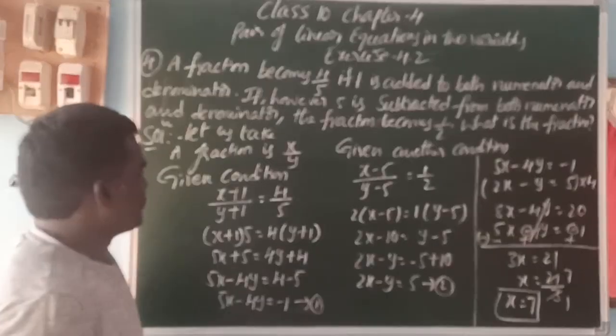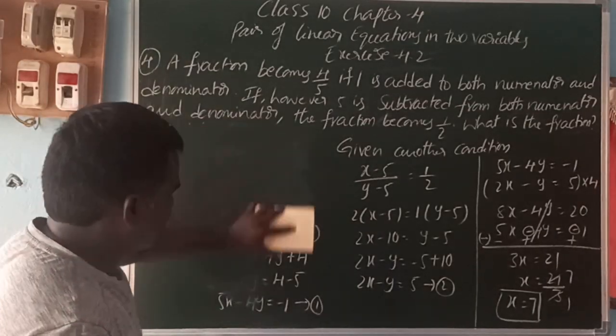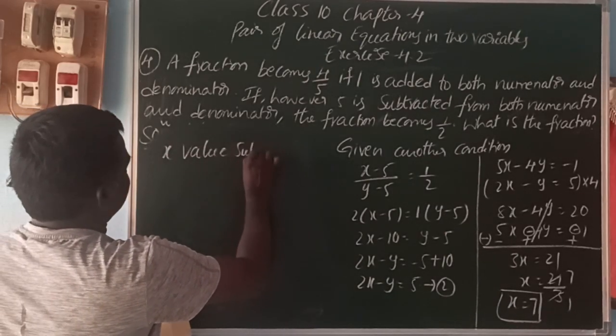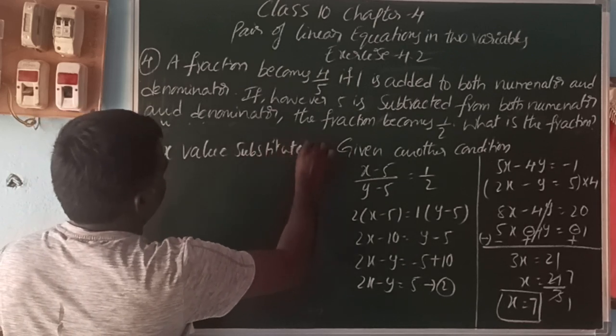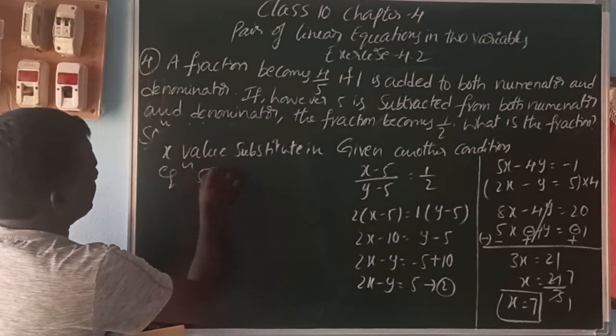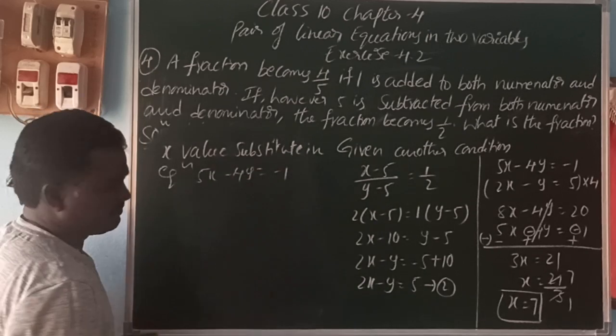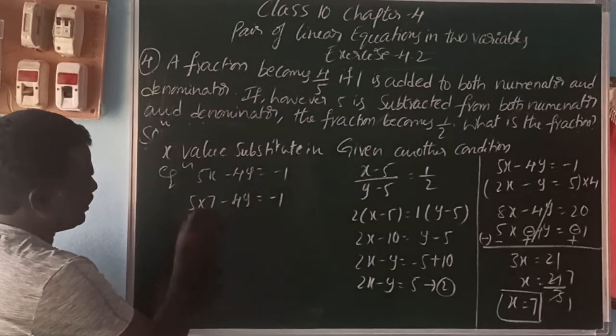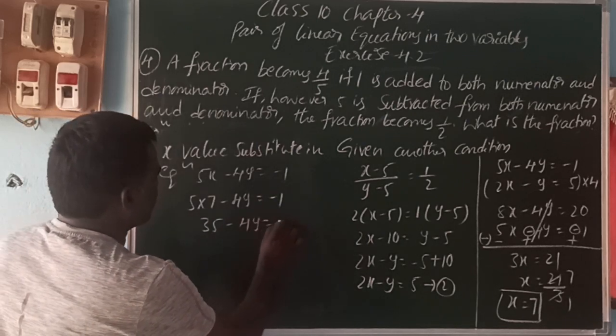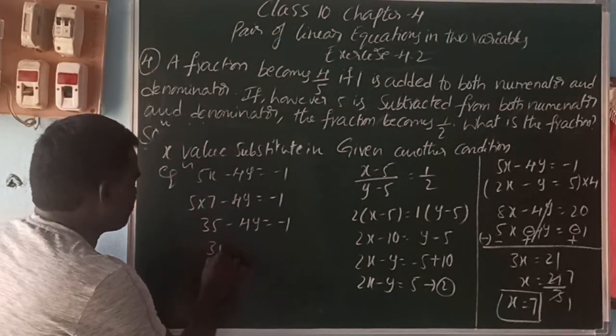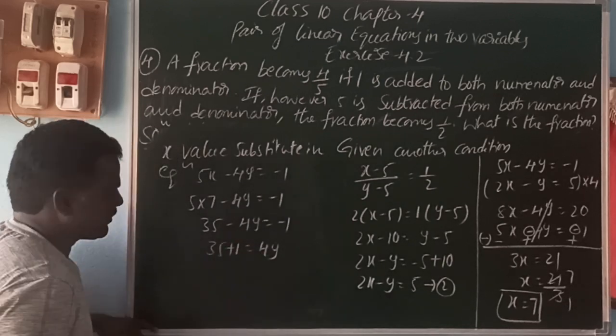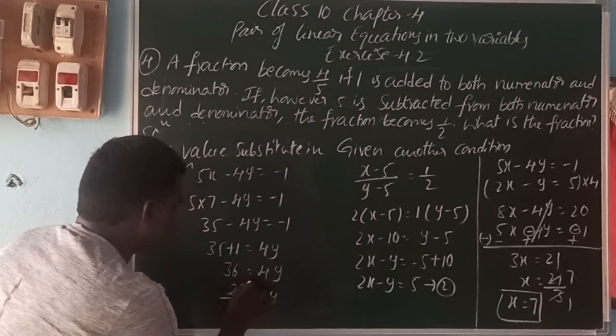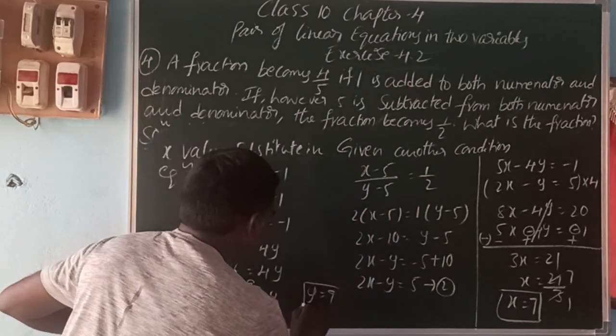Now, we can find y value. So, the x value can be substituted in any one equation, the first equation or second equation. So, x value substitute in equation 1. 5x minus 4y is equal to minus 1. Then, we can get y value. That is here, 5 into 7 minus 4y is equal to minus 1. 5 times 7 is 35 minus 4y is equal to minus 1. So, bring minus 1 to the other side, 35 plus 1, 36 is equal to 4y. So, 36 by 4 is equal to y. 4 nines are 36. So, y is equal to 9.